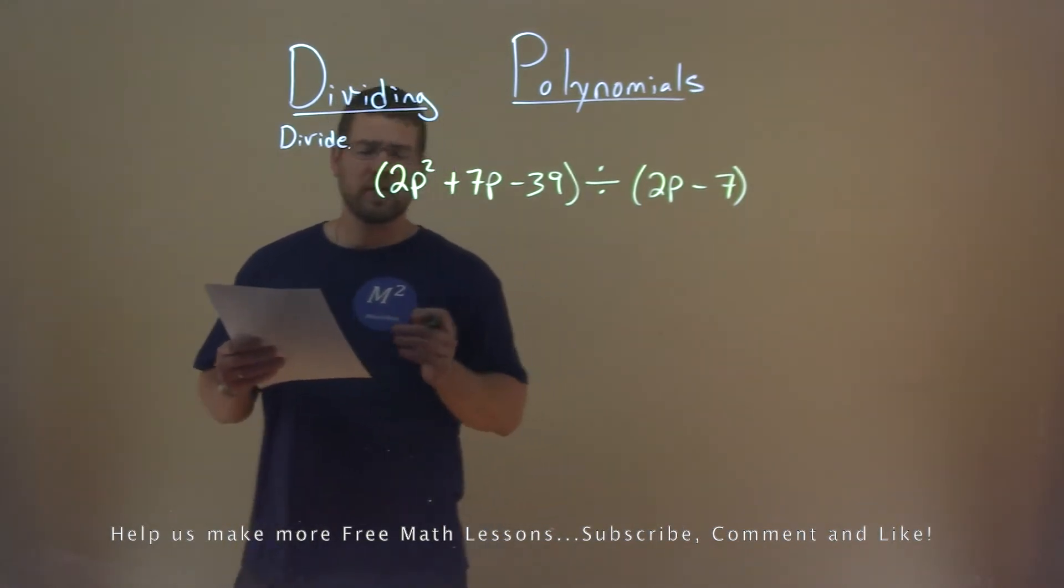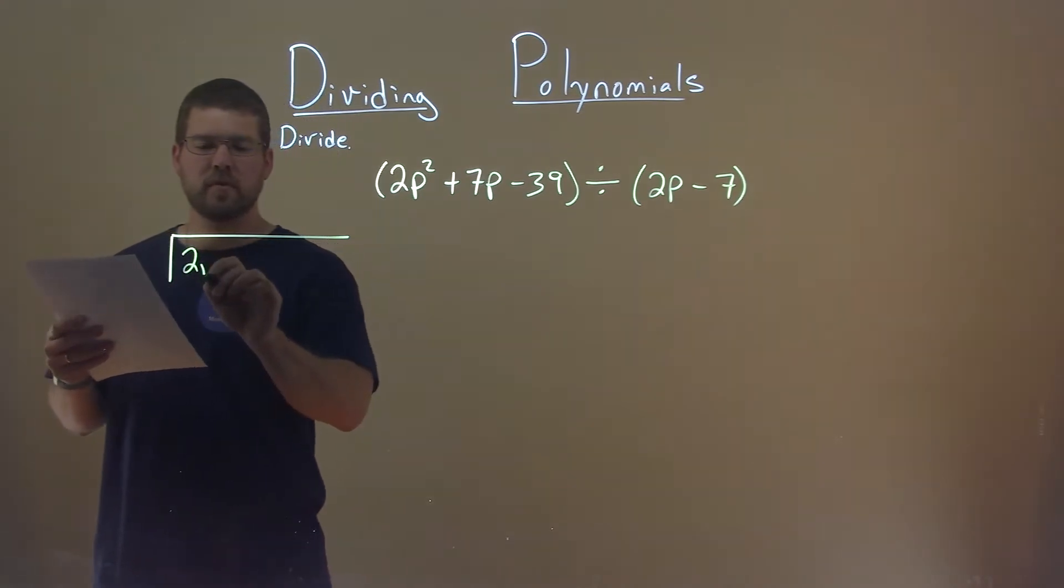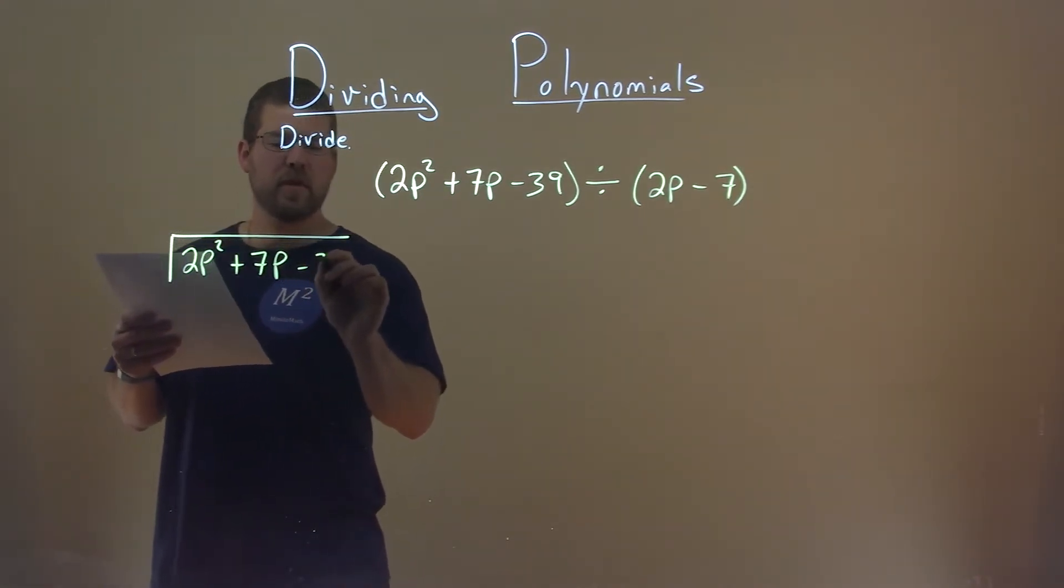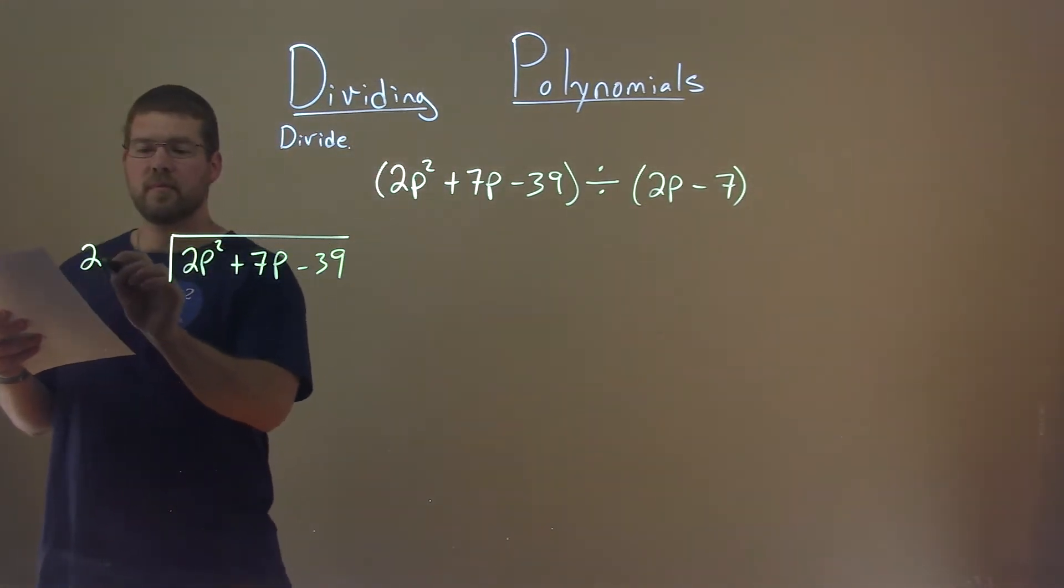Well, let's go set up a long division here. We need to divide it by 2p plus 7p minus 39. Now, this 2p minus 7 can go out here. 2p minus 7.